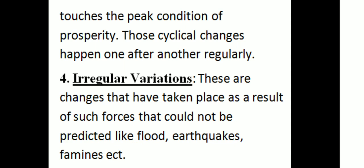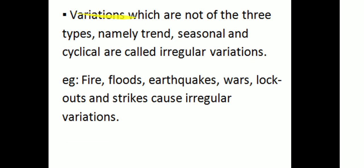Such forces that could not be predicted — like flood, earthquakes, famines, etc. — are irregular variation. Variations which are not of the three types — namely trend, seasonal variation, and cyclical variation — are called irregular variation. Examples of irregular variation: fire, flood, earthquakes, wars, lockouts, and strikes cause irregular variations.